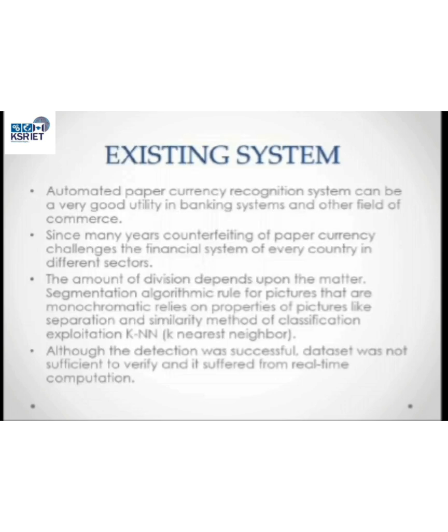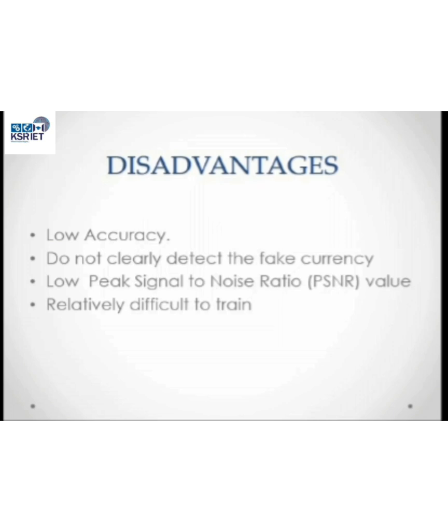Existing System: The segmentation algorithm for images that are monochromatic relies on properties of pixels like separation and similarity method of classification. Although the deduction was successful, it was not sufficient to verify and suffered from real-time competition. Disadvantage: It has low accuracy and low peak signal-to-noise ratio value.